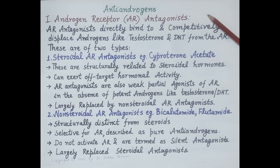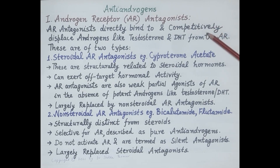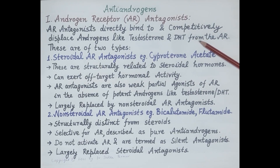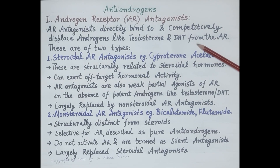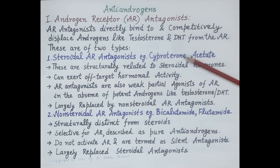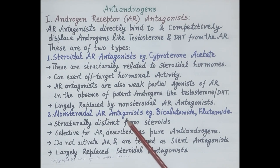Androgen receptor antagonists act by binding to androgen receptors. These drugs competitively displace androgens like testosterone and dihydrotestosterone from androgen receptors, thereby preventing androgens from producing their pharmacological actions. Androgen receptor antagonists are of two types: steroidal and non-steroidal.